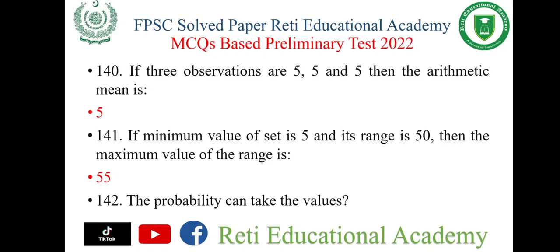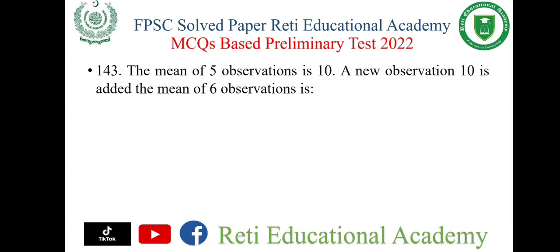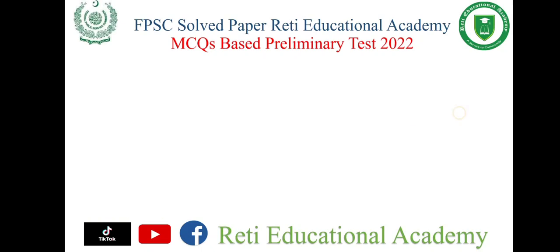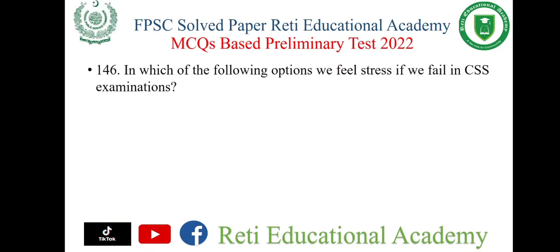Question number 141: If the minimum value of a set is 5 and its range is 50, then the maximum value is 55. Question number 142: The probability can take values 0 to 1. Question number 143: The mean of 5 observations is 10; a new observation 10 is added — the mean of 6 observations is 10. Question number 144: Mean is a measure of location. Question number 145: Which of the following plays a major role in reaction to stress? The right option is personality. Question number 146: If we fail in a CSS examination, we feel stress — what type of stress is this? The right option is mental.